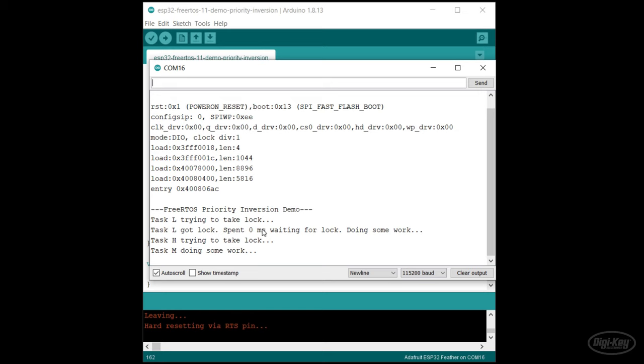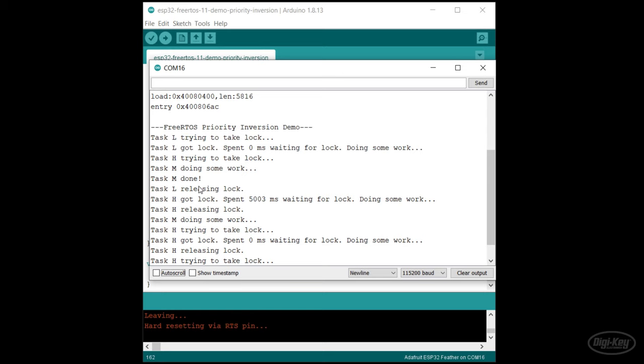Task L takes the lock immediately. Task H tries to take it and is blocked. Task M then interrupts task L and does its work for 5 whole seconds. Only when task M is done does task L release the lock and task H can take it. However, note that task H spent those 5 seconds waiting for the lock. If task H was some critical function, this could be really bad.